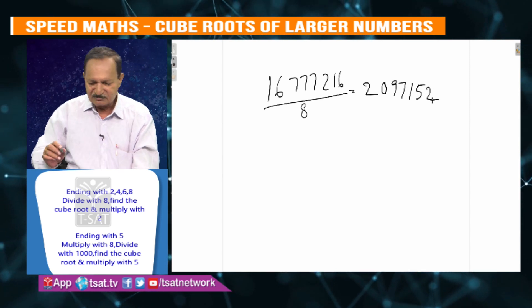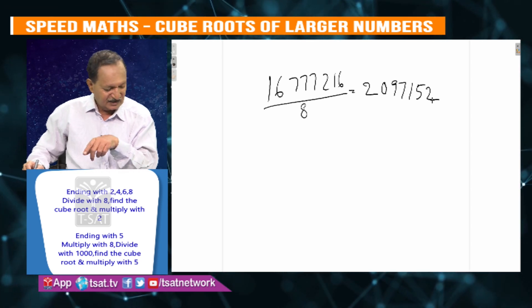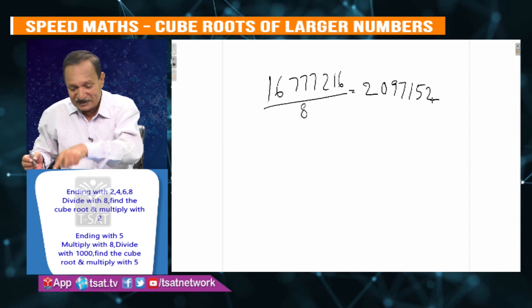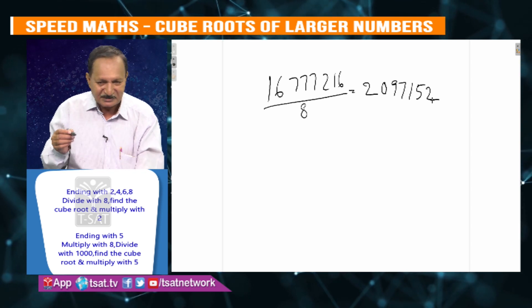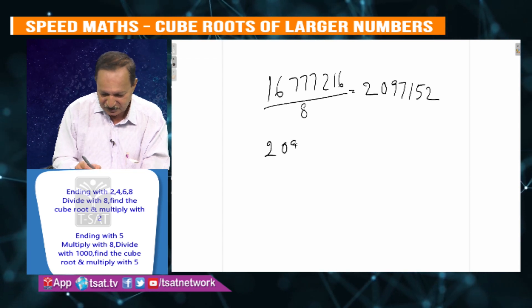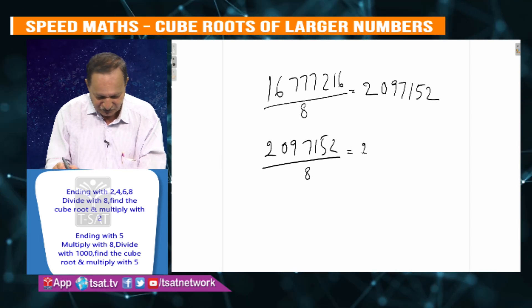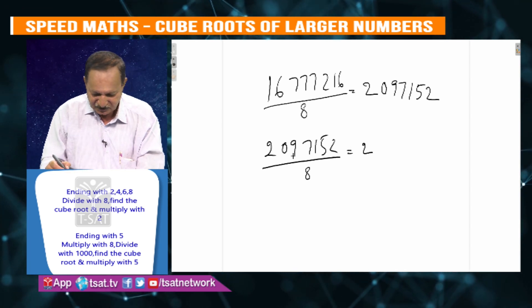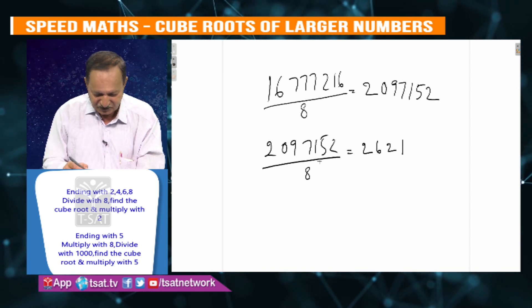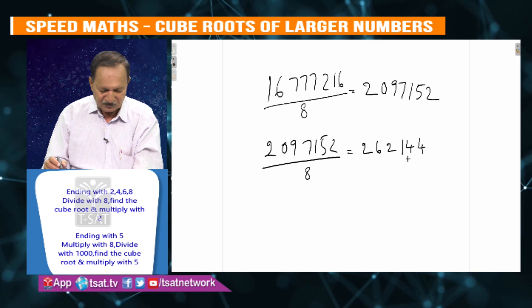2, 0, 9, 7, 1, 5, 2 — working through 2097152. 2, 6, 2, 1, 4.